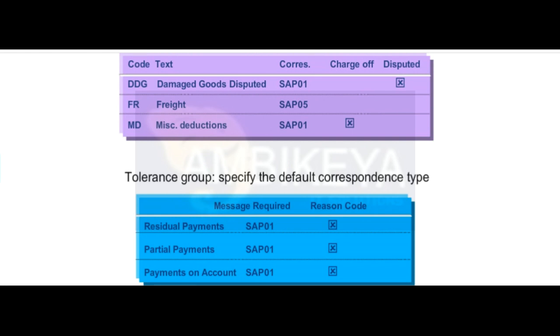If reason codes occur with different types of payment notices, the type of payment notice defined for the tolerance group is sent. This way, you can cover all types of reason codes. If reason codes occur without allocated payment notices, the system again uses the tolerance group to determine the type of payment notice.